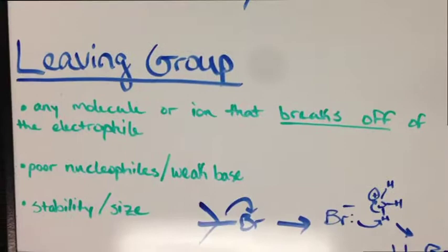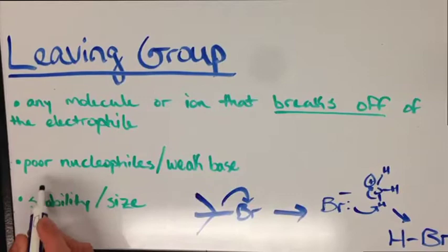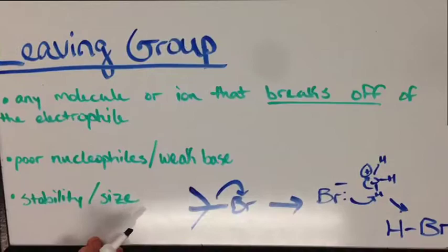The third major component is leaving groups. A leaving group is any molecule or ion that breaks off the electrophile. Leaving groups are usually the opposite of nucleophiles, meaning that a poor nucleophile is a good leaving group. In general, the larger the molecule, the more stable it is, therefore making it a better leaving group.